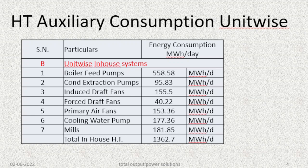The high-tension auxiliary consumption unit-wise was also noted. The unit-wise in-house systems include boiler fuel pumps, condensate extraction pumps, induced draught fans, FD fans, primary air fans, cooling water pumps, and mills. The total in-house high-tension auxiliary consumption for one unit was 1362.7 MWh per day per unit.